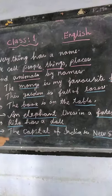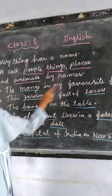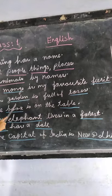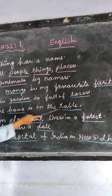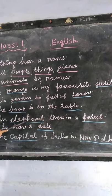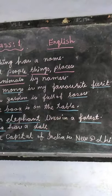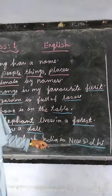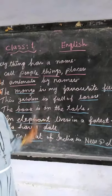Let's review all the naming words we saw: maimbo, fruit, garden, roses, book, table, elephant, forest, Rita, doll, capital, New Delhi. These are all the naming words from our examples.